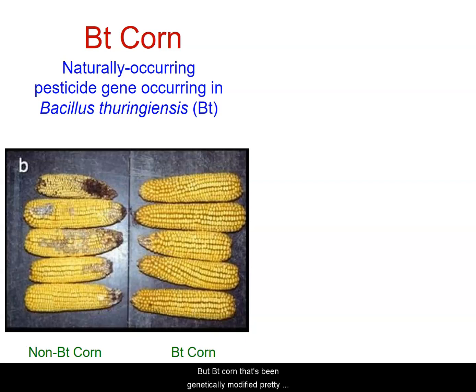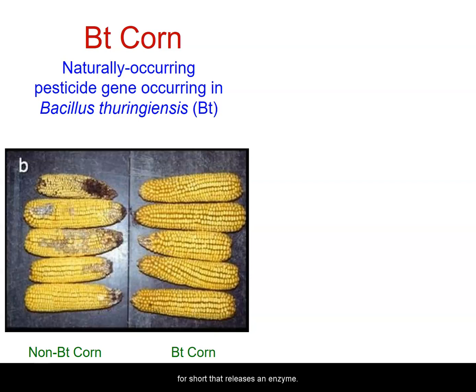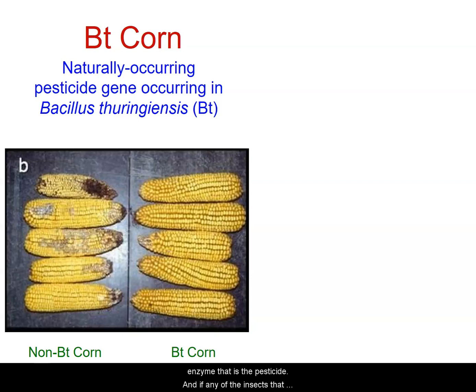But Bt corn that's been genetically modified pretty much looks untouched. That's because there's a specific bacteria called Bacillus theranogenesis, or Bt for short, that releases an enzyme — and remember, an enzyme is a protein. It has a gene in its genome that makes an enzyme that is a pesticide. If any of the insects that like corn eat this naturally occurring pesticide produced by these bacteria, they will die.